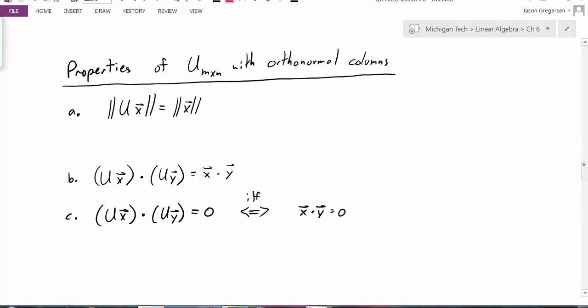Now what are the other special properties of having orthonormal columns? Well, I have three listed here. The first one says that the magnitude of U times X is equal to the magnitude of X. The next one says that if we take the dot product of Ux dotted with Uy, it's the same thing as the dot product of X and Y. And the last one says that if the dot product of Ux and Uy is equal to 0, that's true if and only if the dot product of X and Y are equal to 0.